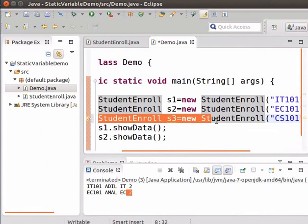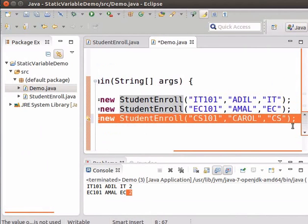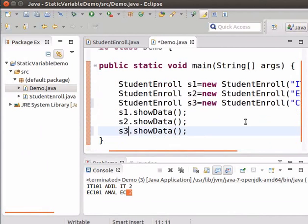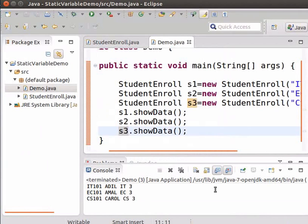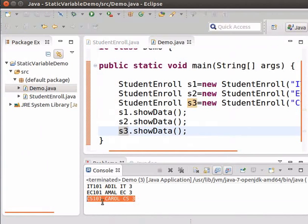Now create one more object s3. Now let us invoke the showData method again using s3. Run the demo program again. We can see that the values of the instance variables corresponding to s3 get printed. Also note that the value of the number of student enrollments is now updated to 3 in all the cases. Now we can understand that the value of the number of student enrollments is common to all the objects.